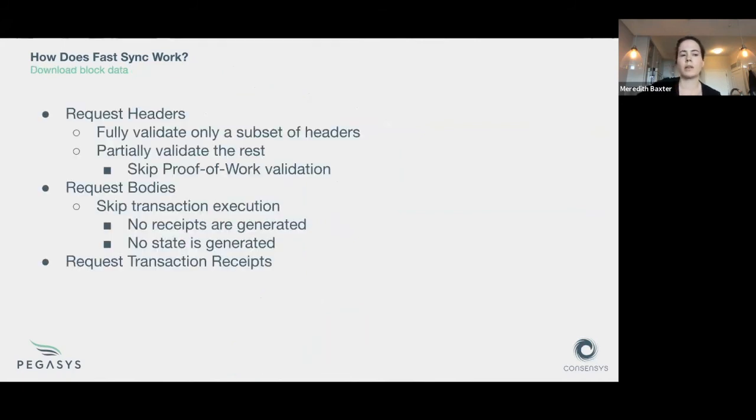The block data that we request is a little bit different and the processing is a little bit different in fast sync. We'll request the headers, but we don't fully validate them. We only fully validate a subset of headers. For most of them we're skipping proof of work. That's the computationally expensive slow part, so that's where some of the speed comes from. We'll request bodies, but we're no longer processing transactions.